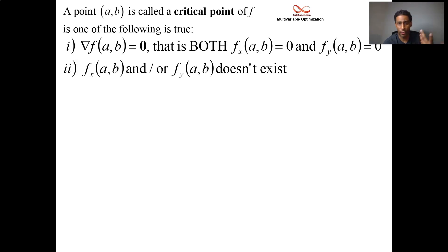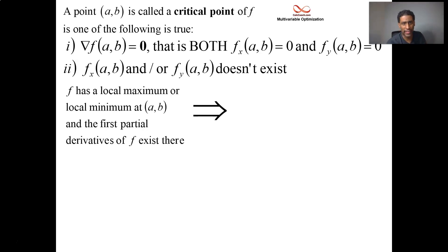Now we know that if you do have a local min or a local max and the first partials exist, then it must be true that f_x and f_y, the partials with respect to x and y at that point, must be equal to zero. This is an if-then statement, a conditional. If you have a local min or a local max and the first partial derivatives exist, then it must be that the first partial derivatives equal zero.